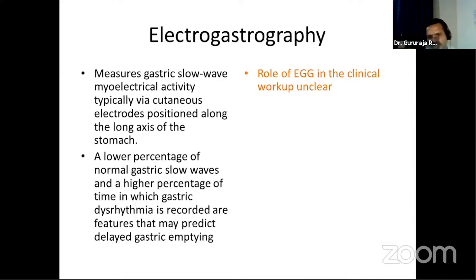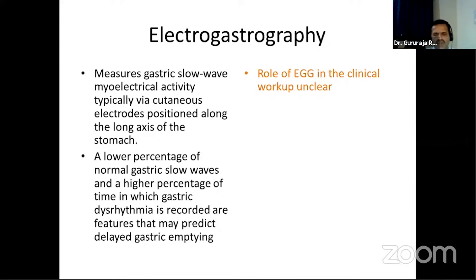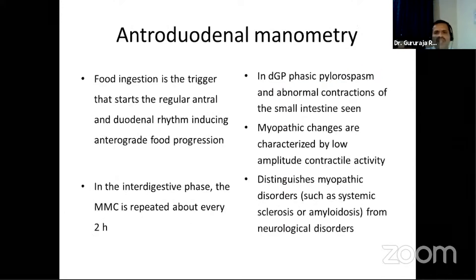Electrogastrography measures the myoelectrical activity of the stomach using electrodes positioned along the long axis of the stomach. Significant signal processing is required to subtract interfering signals, which itself results in loss of some signal information. Newer modalities include disposable transmitting electrodes that are swallowed or endoscopically placed electrodes, but these remain in early development stages and their role in clinical workup is still not well-defined according to current guidelines.